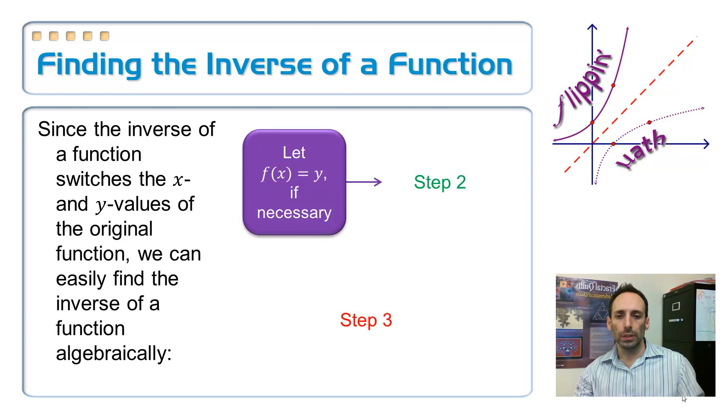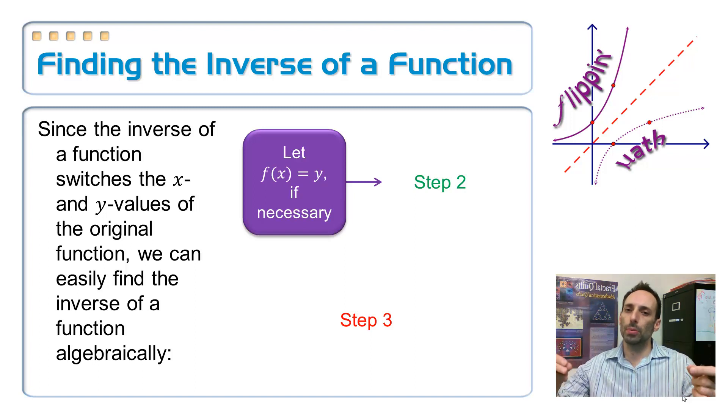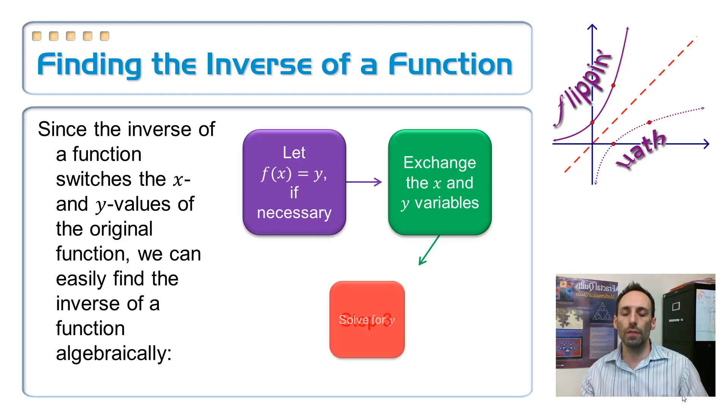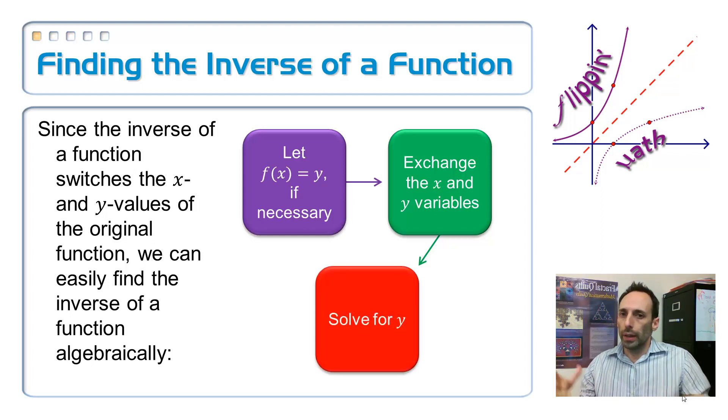So step number one, just to clarify it a little bit, take the f of x out, put a y in its place. That way you don't have to keep writing f of x down a whole bunch. Now step two, what happens with your inputs and your outputs, your x and your y? They get switched, so that's exactly what you do. You exchange the x and the y values. And then usually we write our equation in y equals form, so you just finally solve that equation for y, and you're done.